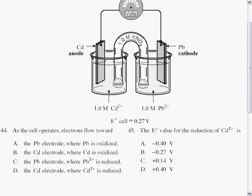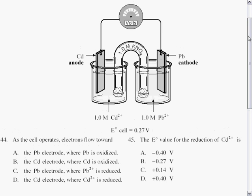Okay, to answer the first question, question 44, consider the electron flow. In this particular cell, electrons always flow from anode to cathode.